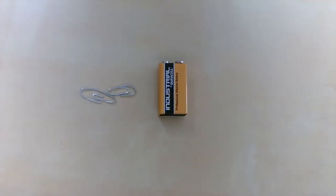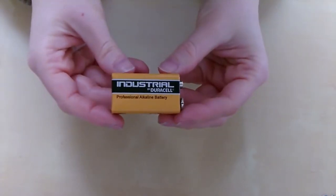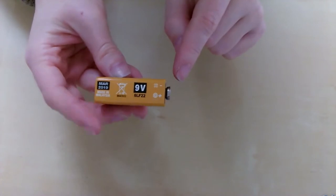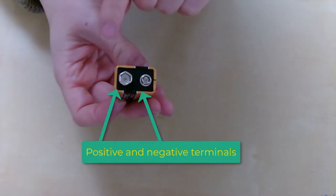The first thing we need to do is get our paperclips and our battery. Our battery should have a positive and a negative input. This is where we're going to attach our paperclips, which are acting as wires in this case.